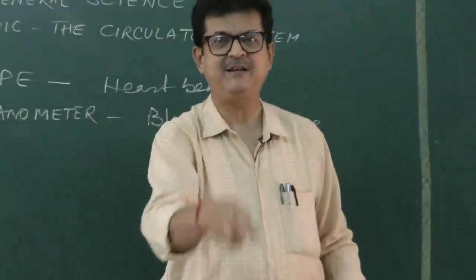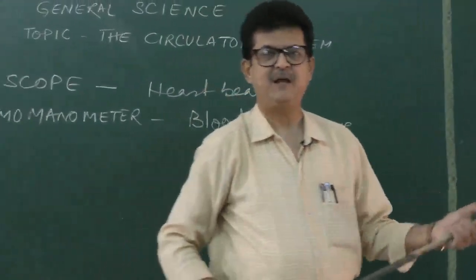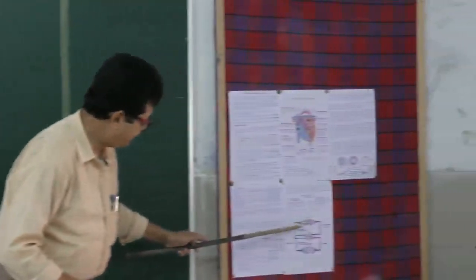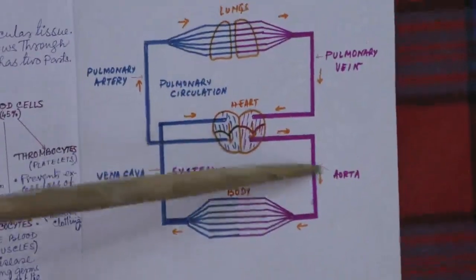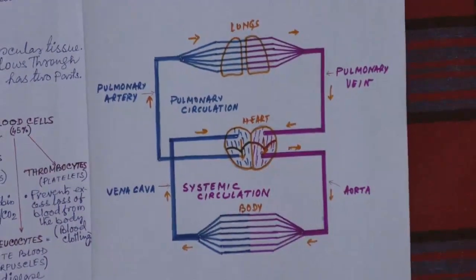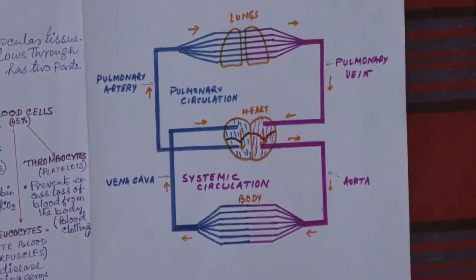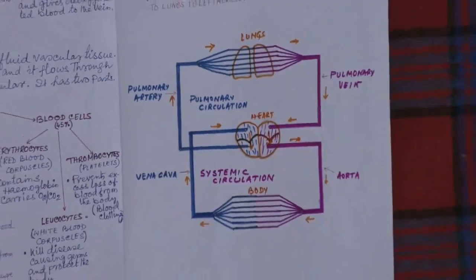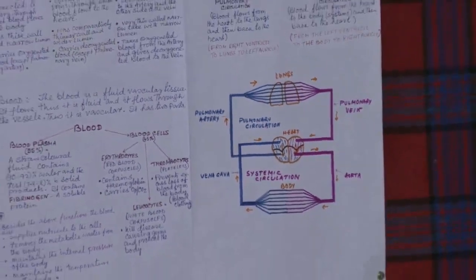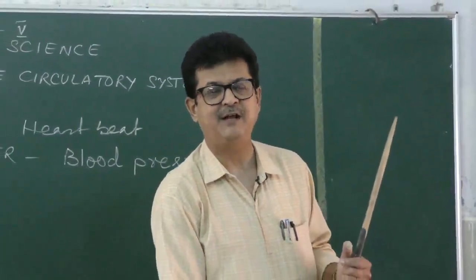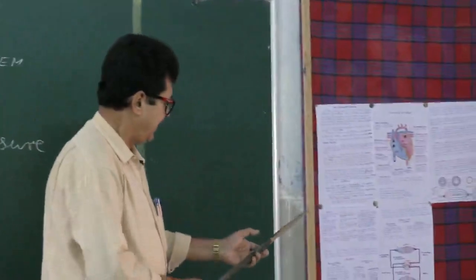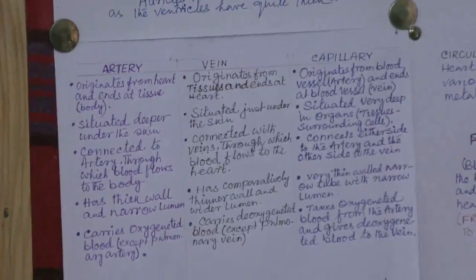There are two circulations. The circulation heart → lungs → heart is called pulmonary circulation. The circulation heart → body → heart is called systemic circulation. When blood carries oxygen it is bright red, and it carries oxygen to the cells. After the oxygen is used up, the blood comes back to the heart to be sent to the lungs for oxygenation again.